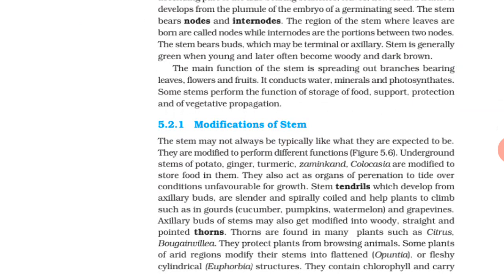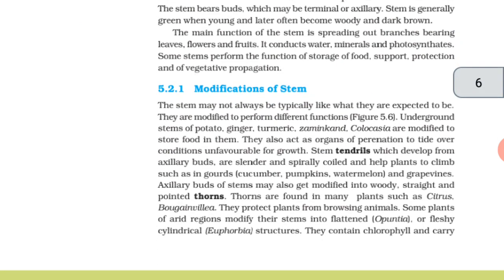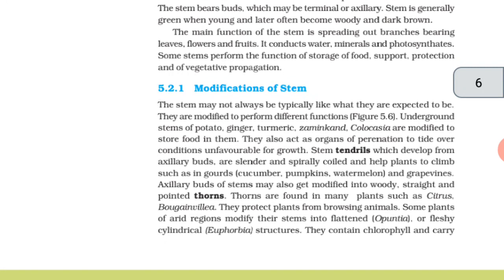They also act as organs of perennation to tide over conditions unfavorable for growth. The stem tendrils, which develop from axillary buds, are slender and spirally coiled, and help plants to climb, such as in gourd, cucumber, pumpkin, watermelon, and grapevines.